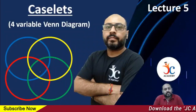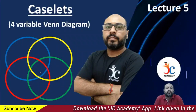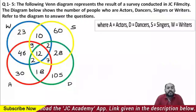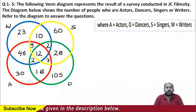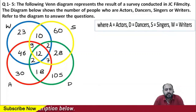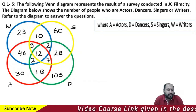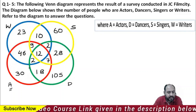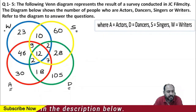Hi guys, welcome to lecture number five on caselets. In this lecture we're going to understand how a four Venn diagram system works. Let's read the question first. The question says the following Venn diagram represents the result of a survey conducted in JC film study. The diagram shows the number of people who are actors, dancers, singers, or writers. The circle with A represents actors, D represents dancers, S represents singers, and W represents writers.